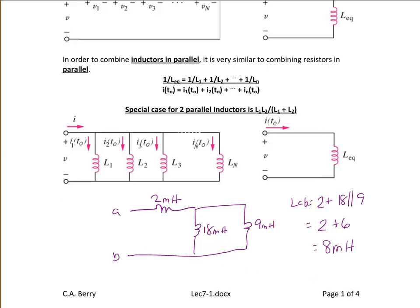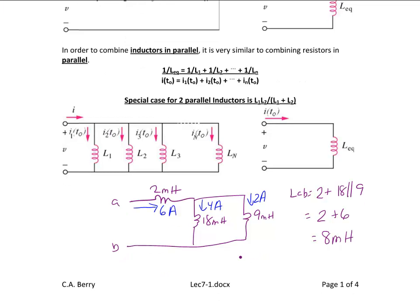Let's assume we had initial currents for each of these inductors. If the initial current through the 2 mH were 6 amps, then the initial current through the 18 mH and the 9 mH would have to be some ratio of that — for example, 4 amps for the 18 mH and 2 amps for the 9 mH — to make sure this still obeys KCL. The resultant combined inductor between A and B would be 8 mH with an initial current of 6 amps. Note these are initial currents, not DC currents.